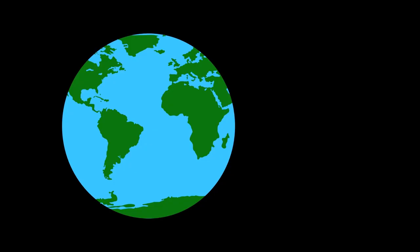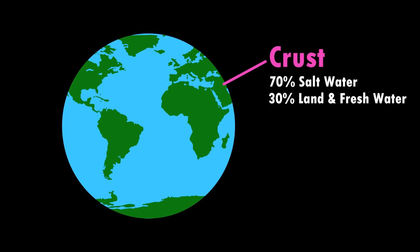The outer layer of the Earth, called the crust, consists of about 70% salt water and 30% land and fresh water.